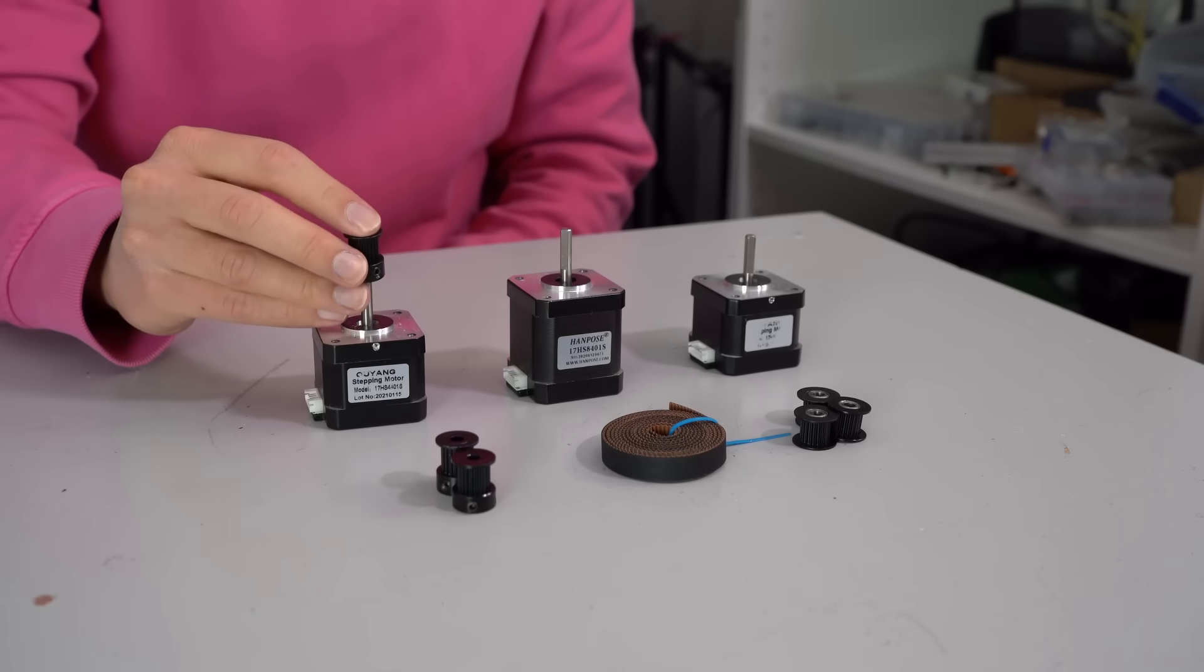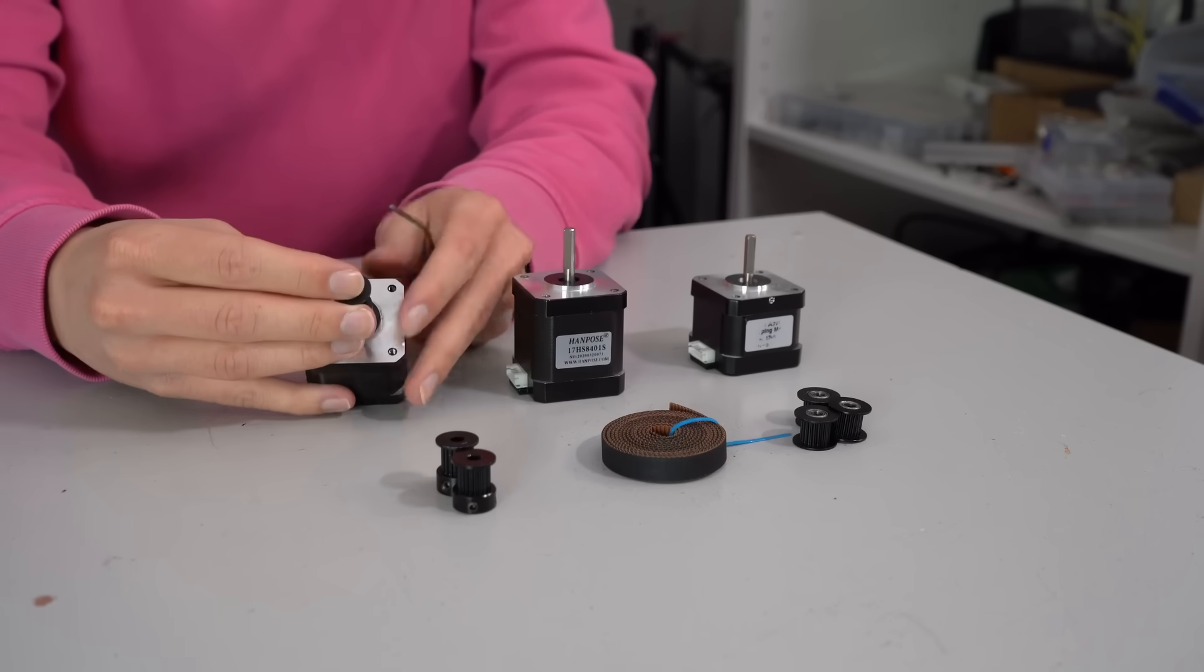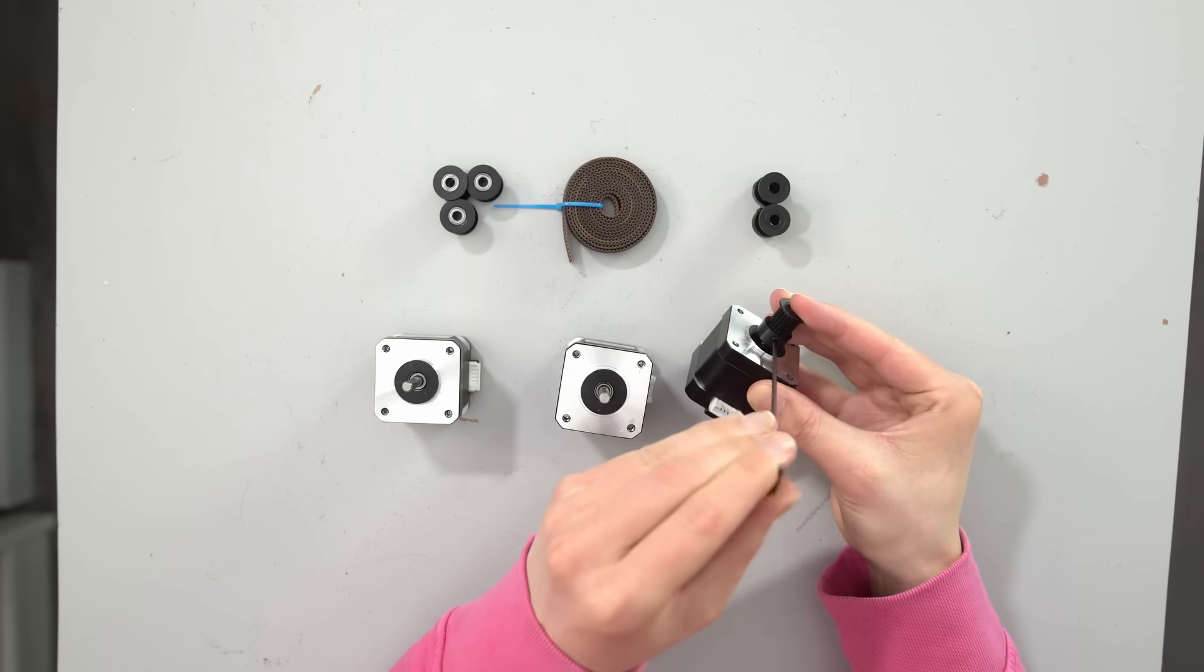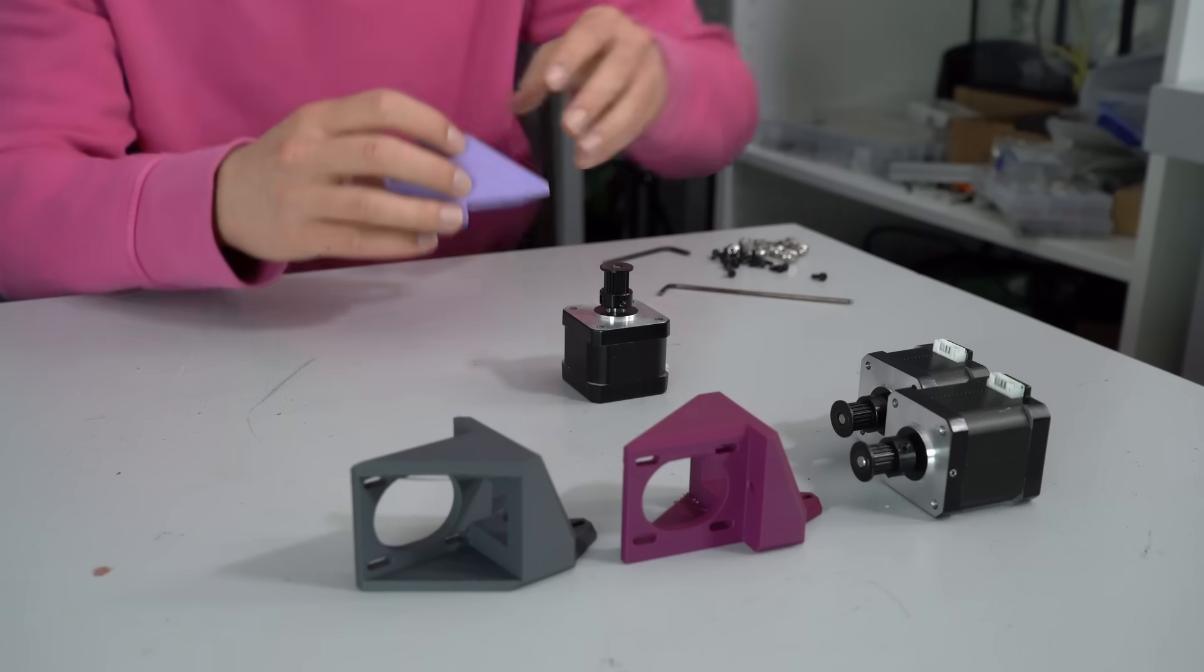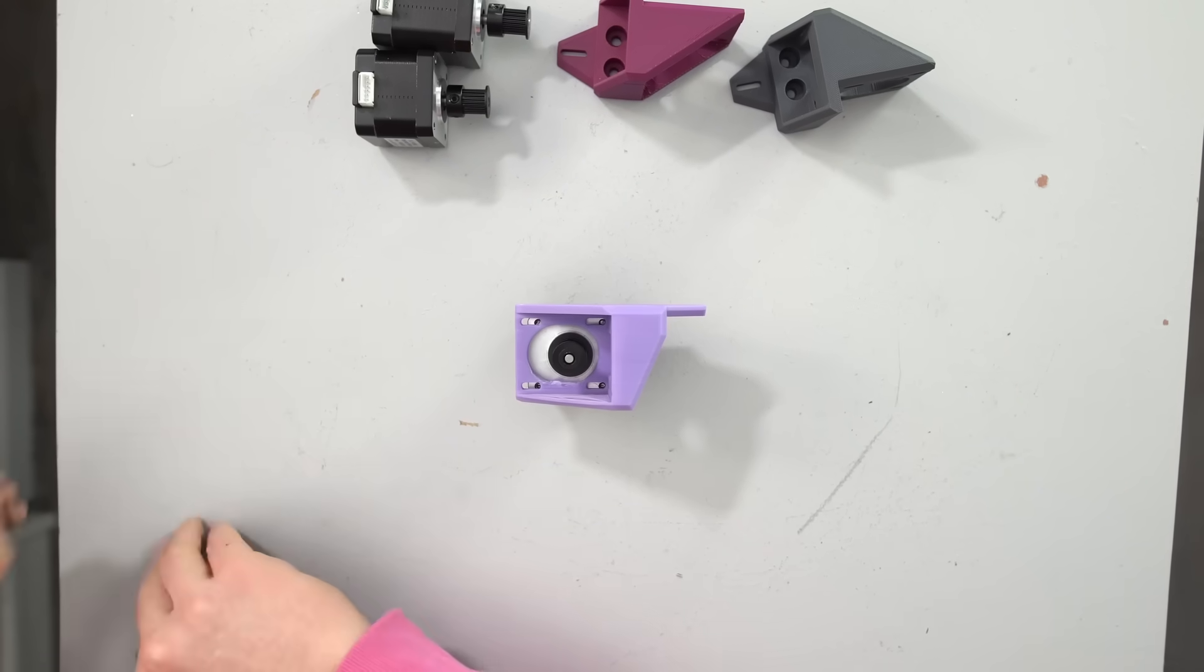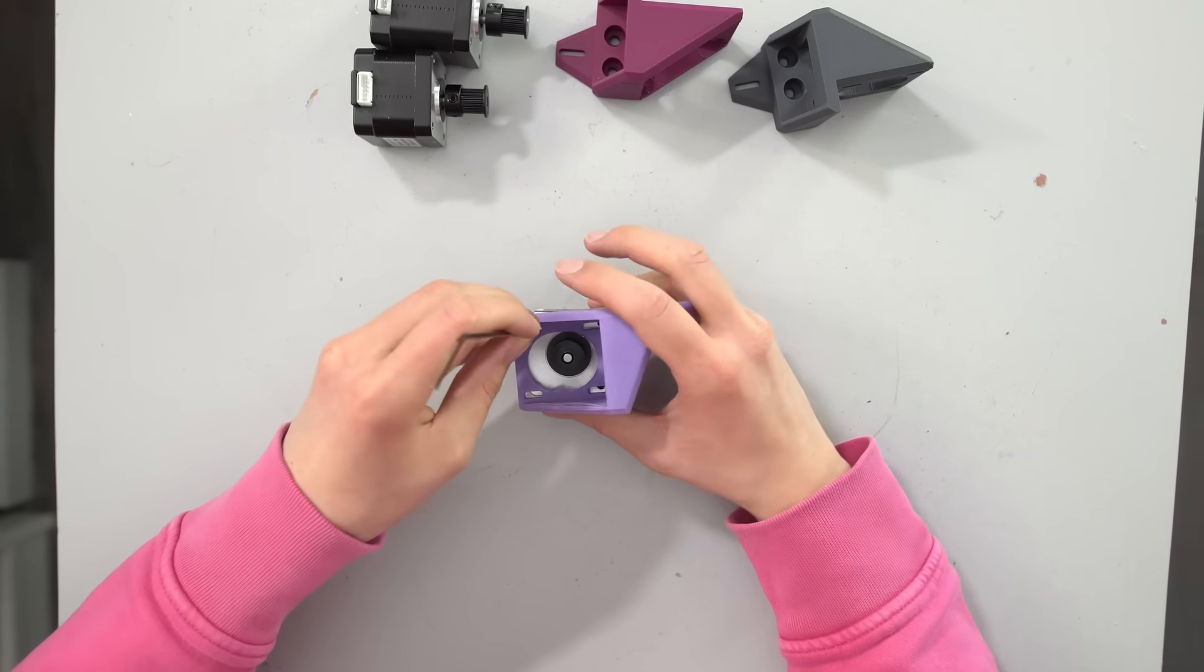To start, we can install all of the 9mm pulleys on the stepper motor shafts. You'll need to play around with the exact position of them once you route the belts, but aligning them flush with the end of the shaft like I've got here is a good starting point. Now we can attach our Z motors to each of the motor mounts with M3x8mm screws. You can also add the M5x10mm screws and T-nuts that we need to attach it to the frame.